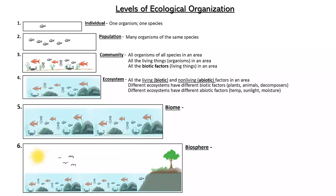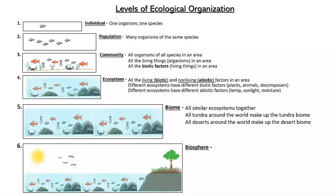Biome — it's all the deserts put together. So you have a bunch of deserts all around the world, but if you put them all together, you get the desert biome. So it's all similar ecosystems together. Same thing with tundra — you put all similar tundras together, that makes the tundra biome. And finally, biosphere. The word 'bio' means living, 'sphere' is area. So biosphere literally means anywhere you find living things, just like hydrosphere is wherever you find water, and geosphere is wherever you find rock.